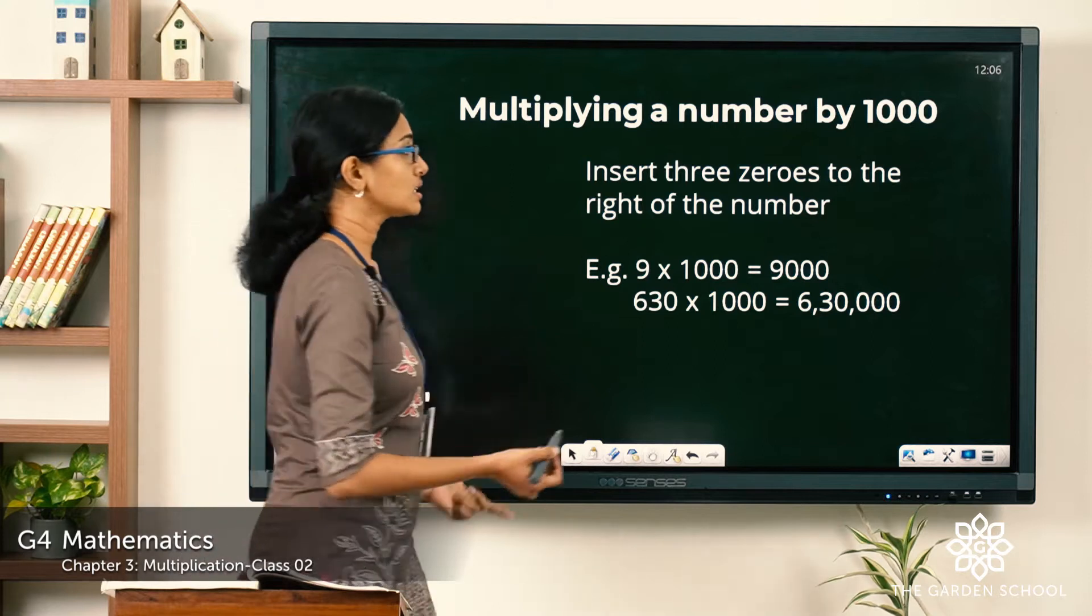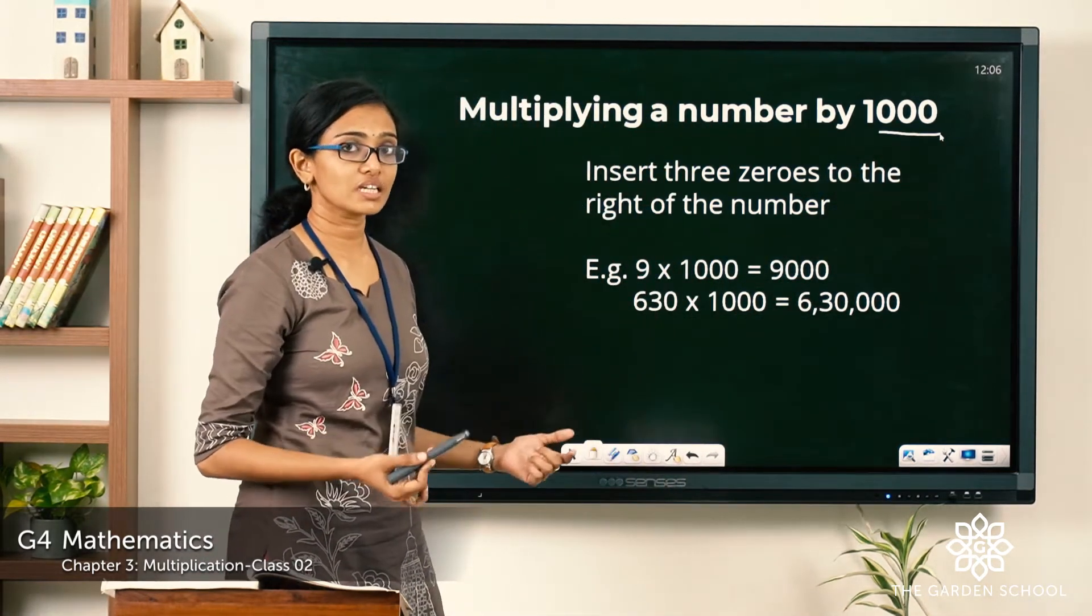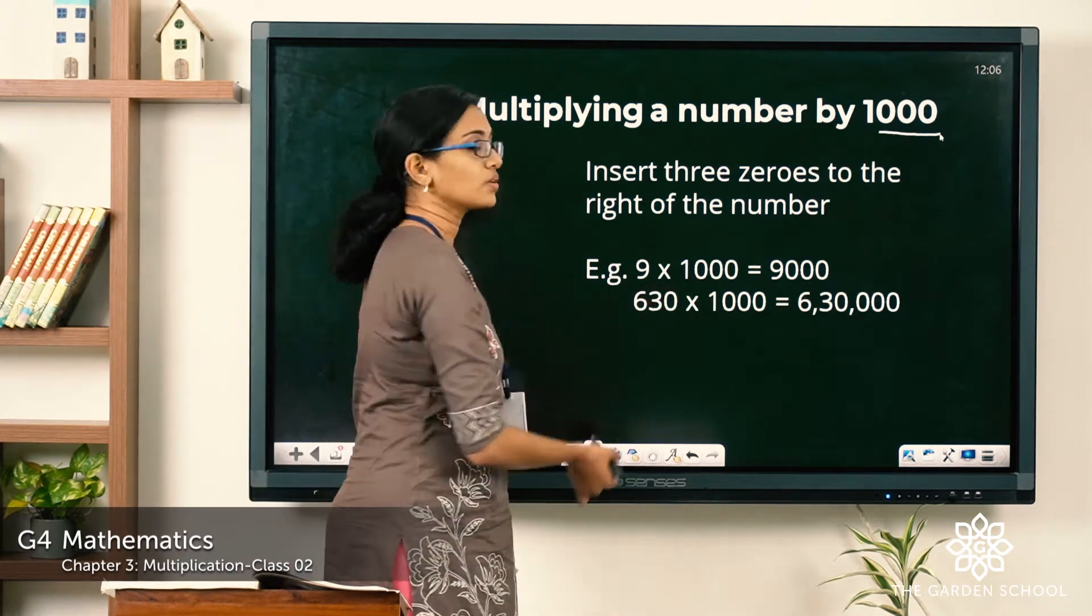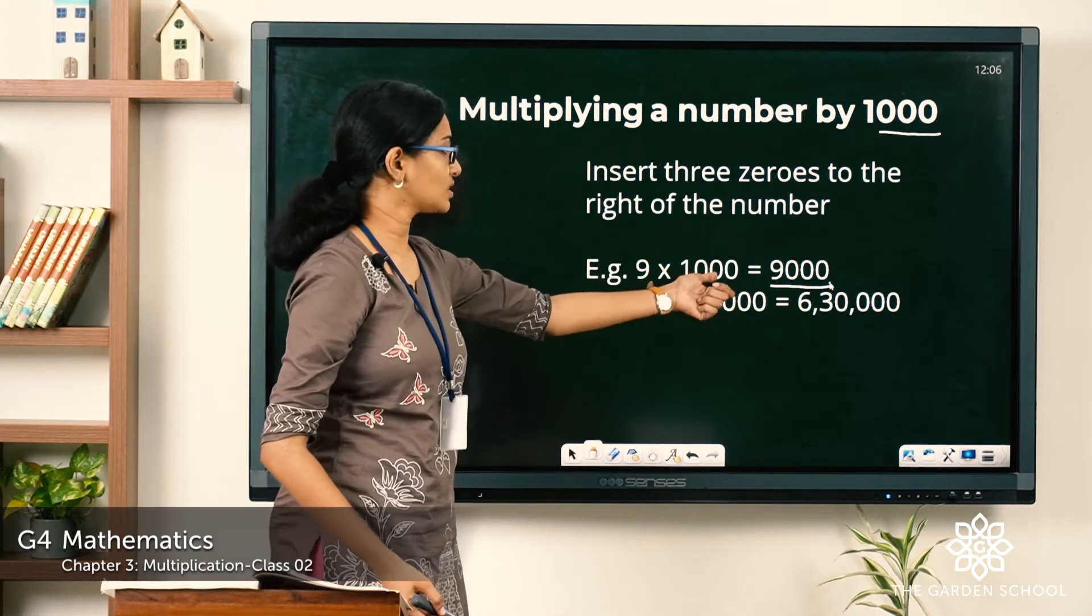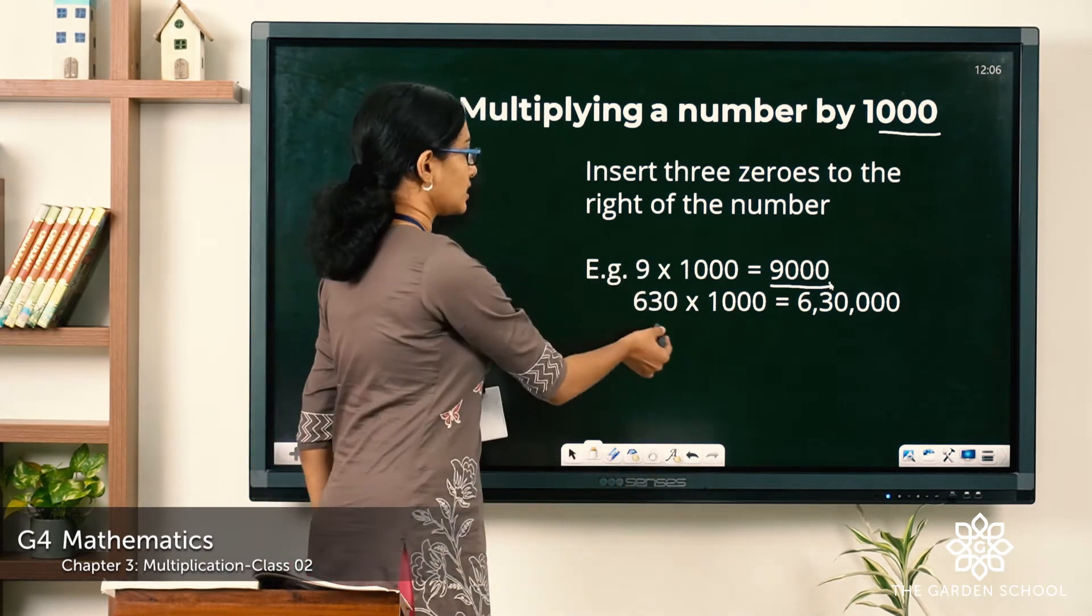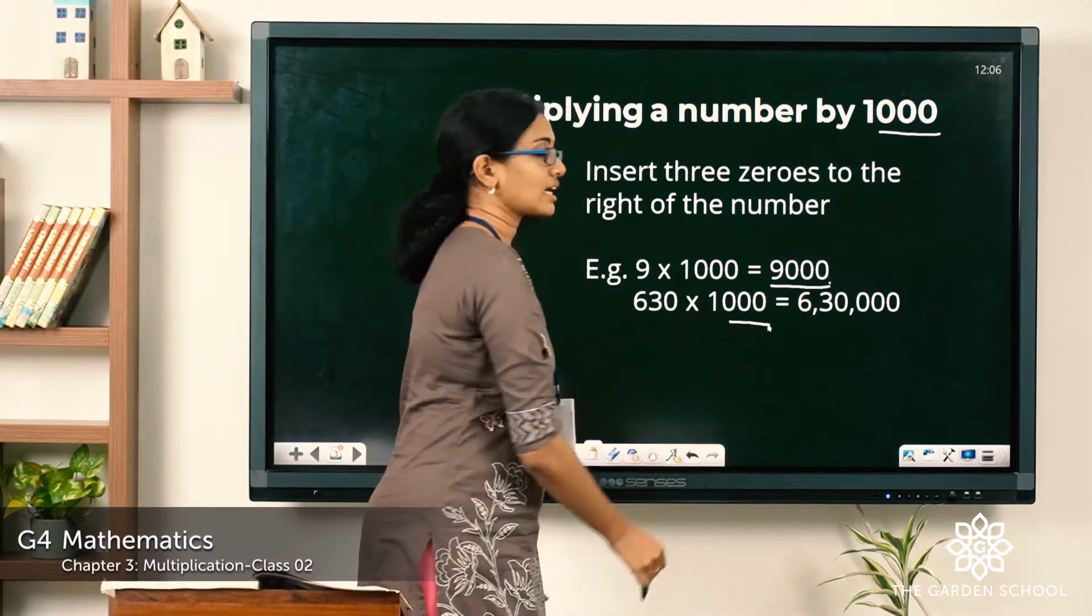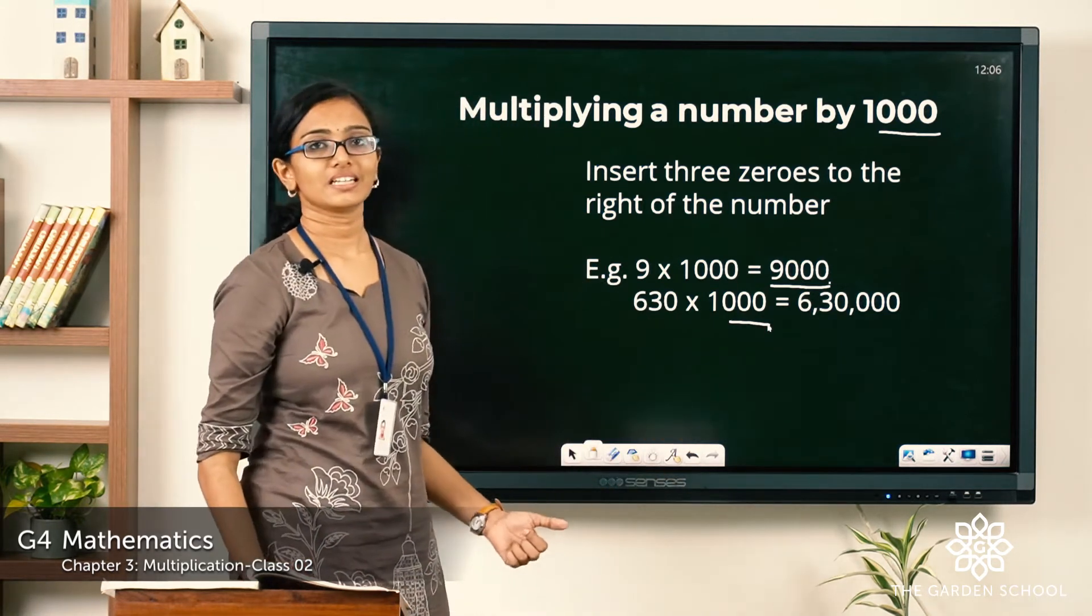When you multiply with 1000, there are three zeros in 1000, so you insert those three zeros to the right of the given number. So if it is 9 into 1000, it is 9000. Here are the three zeros from the 1000 that you multiply with. Now 630 into 1000, inserting three zeros to the right of 630 gives you 6,30,000.